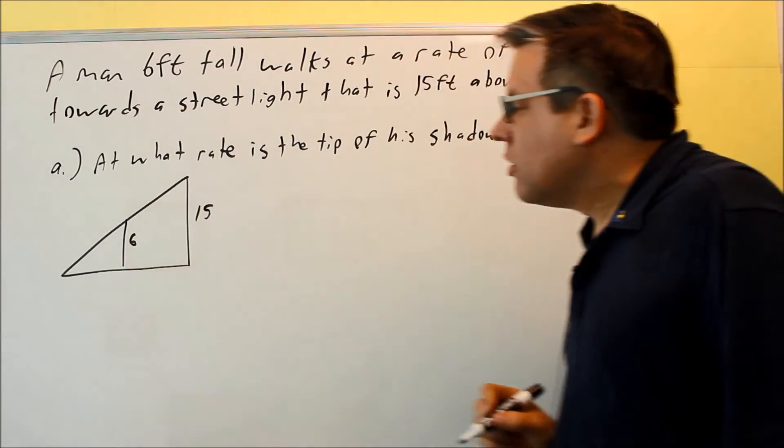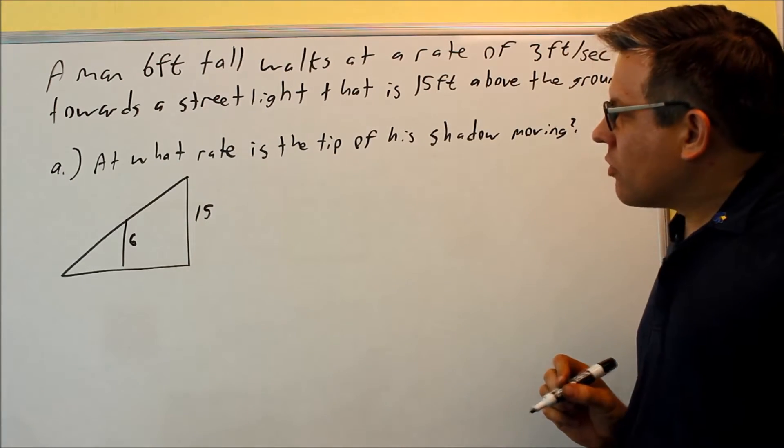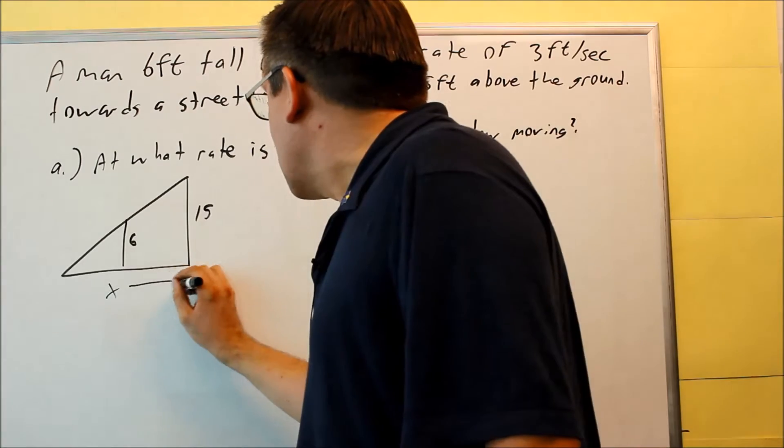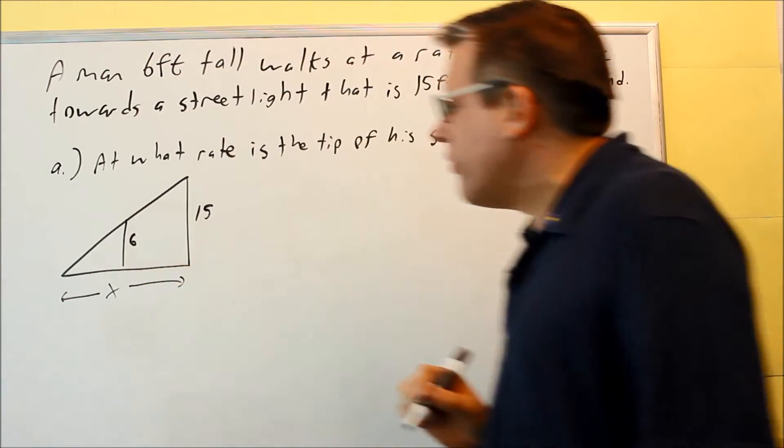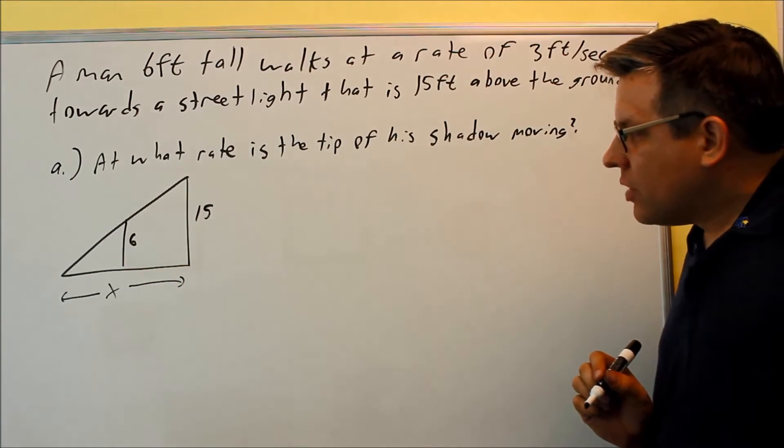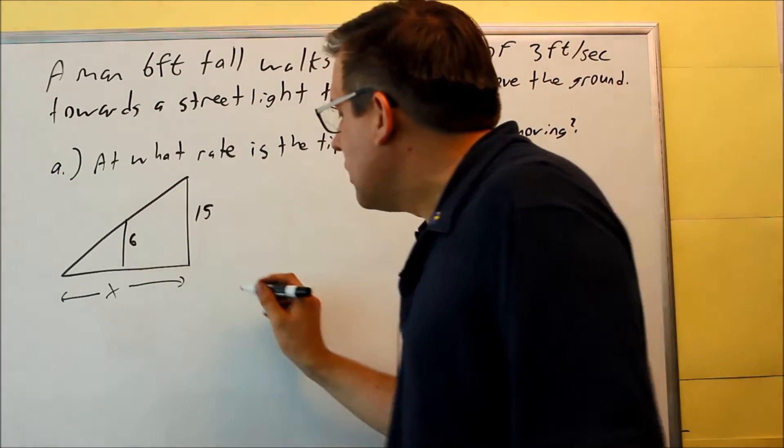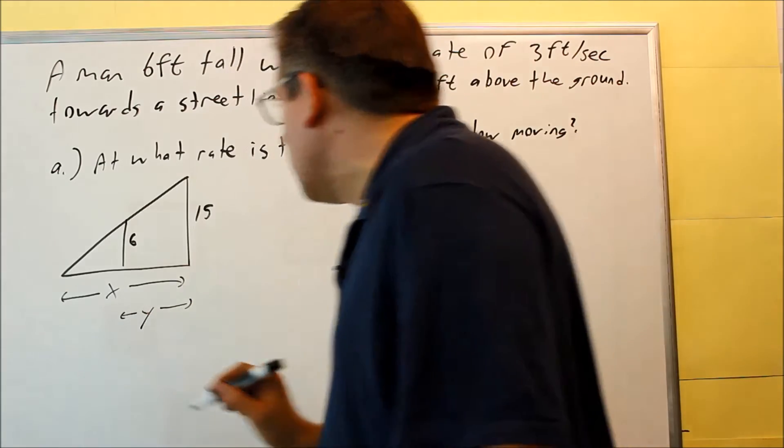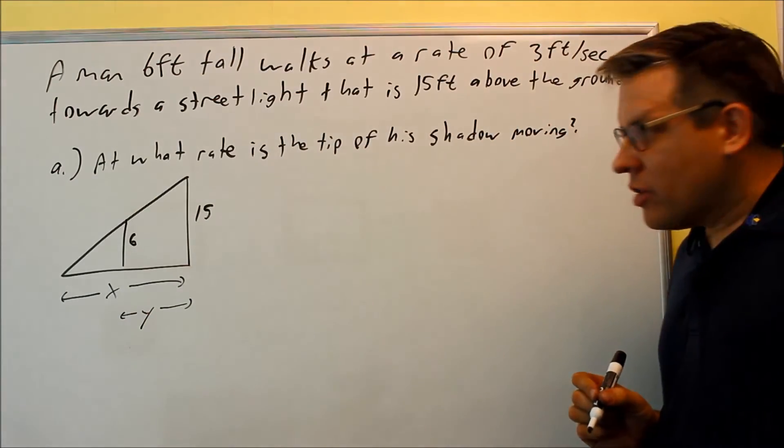The shadow would be along the ground here. So we need to set up some variables. I'm going to call x the length of the street light's shadow, and then y is going to be the distance from the man to the street light.